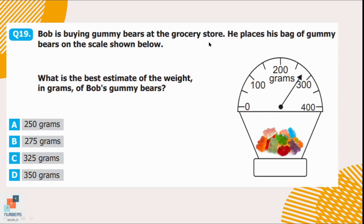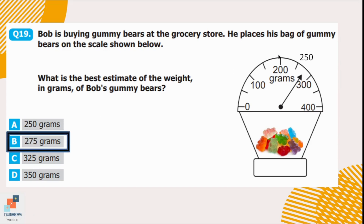Question number 19. Bob is buying gummy bears at a grocery store. He places his bag on a scale. What is the best estimate of the weight in grams? The value between 200 and 300 is 250. Option A is 250 grams, which is incorrect because the arrow is not exactly at 250. Options C and D (325 and 350) are also incorrect because the arrow is not crossing 300 — it's between 250 and 300. Option B is correct because the midpoint of 250 and 300 is 275 grams.